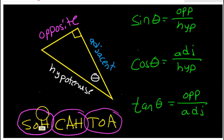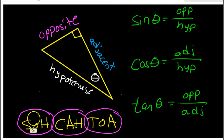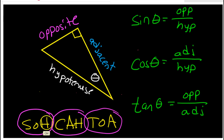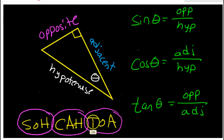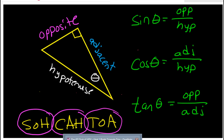This is summarized by the magic word SOHCAHTOA, where SOH means sine is opposite over hypotenuse, CAH means cosine is adjacent over hypotenuse, and TOA means tangent is opposite over adjacent. That will help you remember.